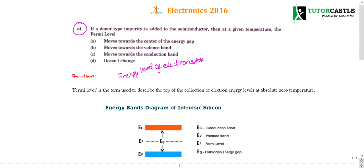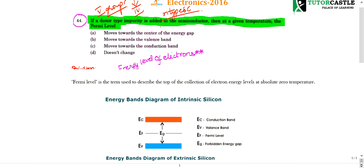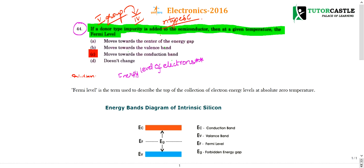Coming back to our question: if donor-type impurity is added to a semiconductor, donor type means n-type material. Fifth group elements have excess electrons, so adding fifth group to fourth group results in an n-type semiconductor. For n-type, the Fermi level moves towards the conduction band. So option C is the right choice. Post any queries in the comment box and subscribe for more updates.